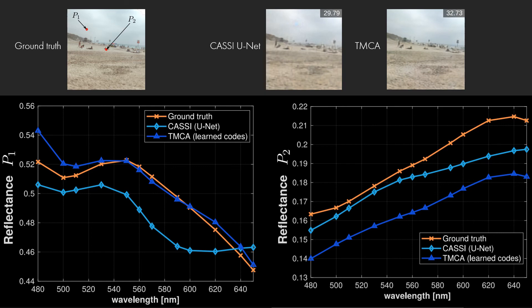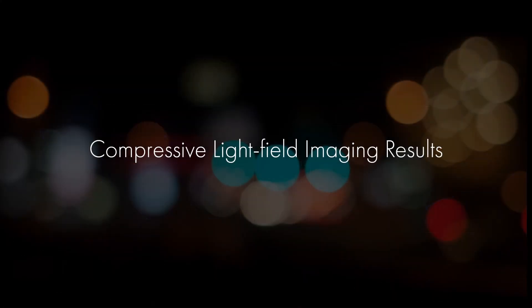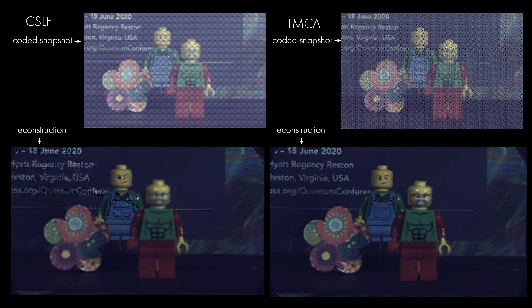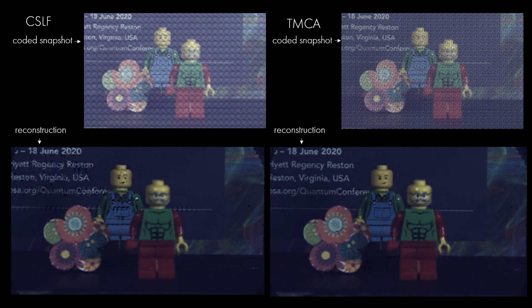This also translates to a compressive light field imaging setup. For compressive light field, TMCA yields more accurate reconstructions and less color loss. This is also demonstrated with a real prototype we implemented. Here we show the 25 angular views recovered in an animation, along with the captured coded snapshots. Both the text and the details on the clothes of the figurine can be recovered more accurately.